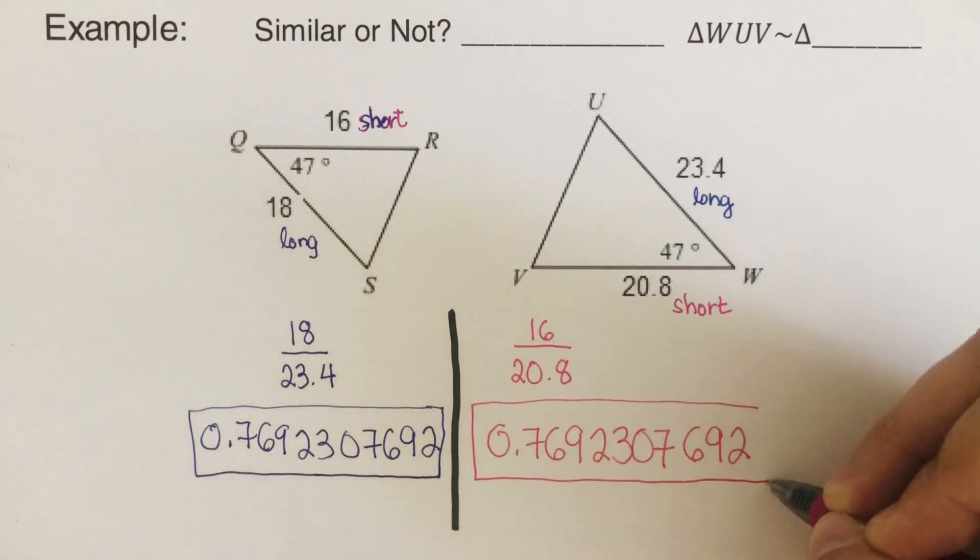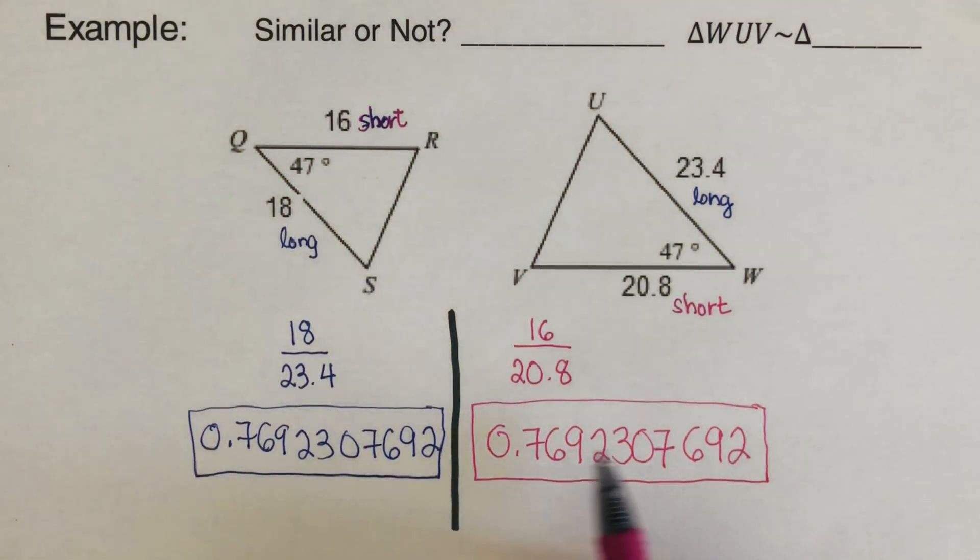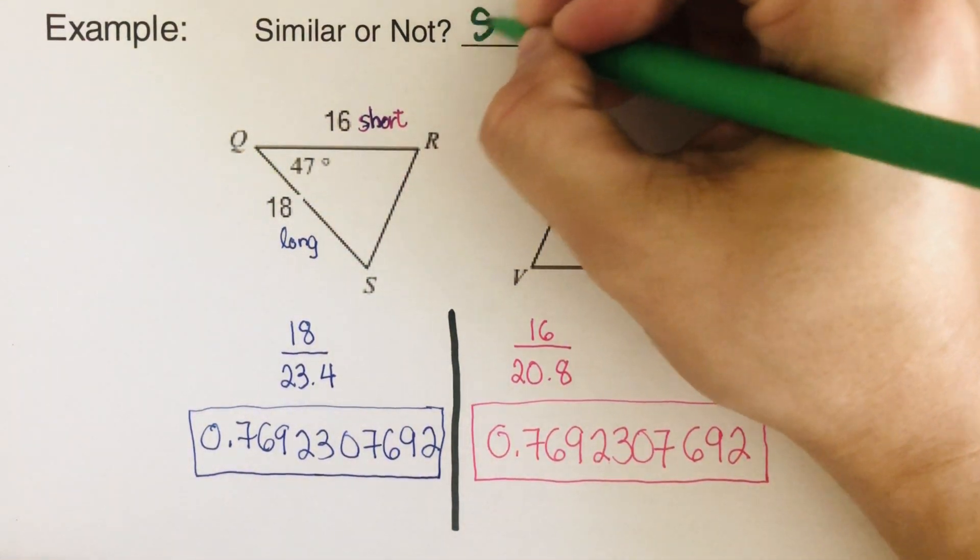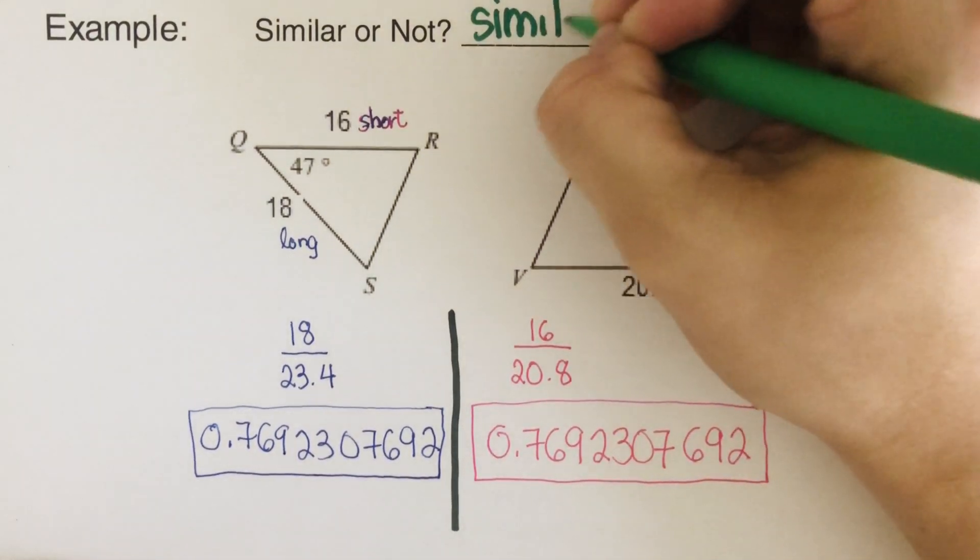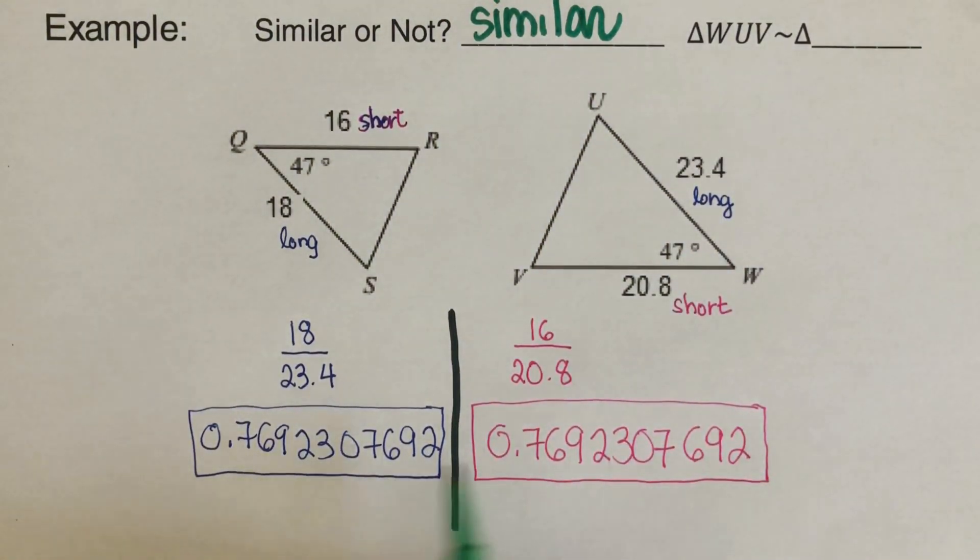And they are exactly a match. This means that these two triangles are similar. Did you get the same answers as this? Good. Perfect.